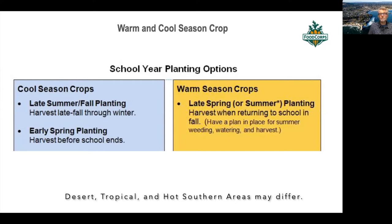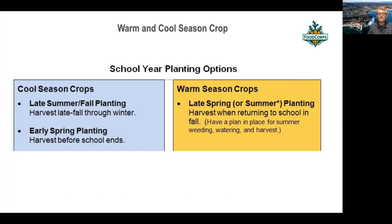For our warm season crops, in most areas we plant them in the spring once it warms up. They grow all summer, depending on if someone's there to care, water, and weed for the plants. The plants will be ready to be harvested when we get back into the schools in August and September. In some areas where it's extremely hot, warm season crops are planned a little bit differently, so check based on your region.